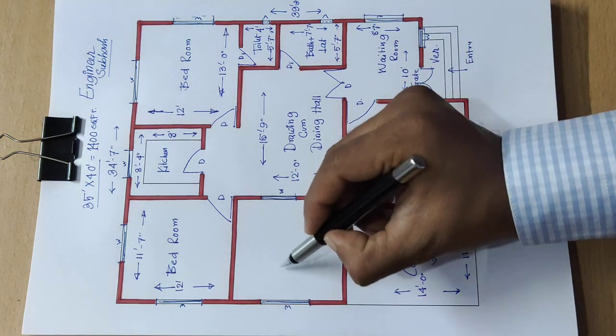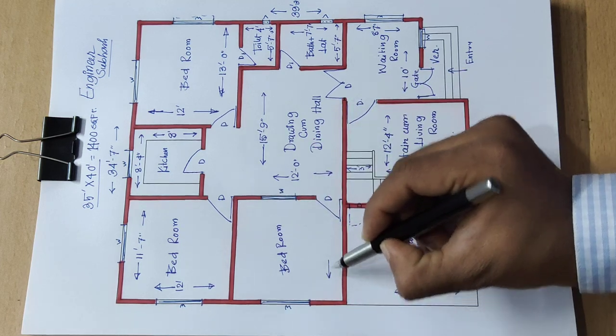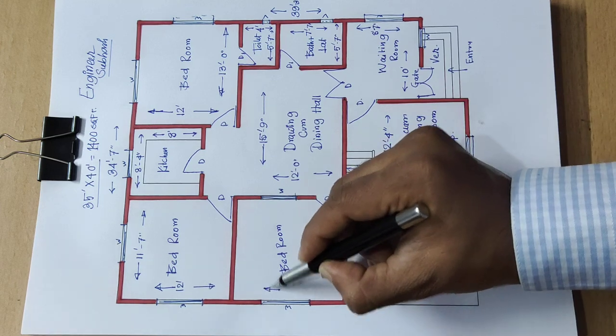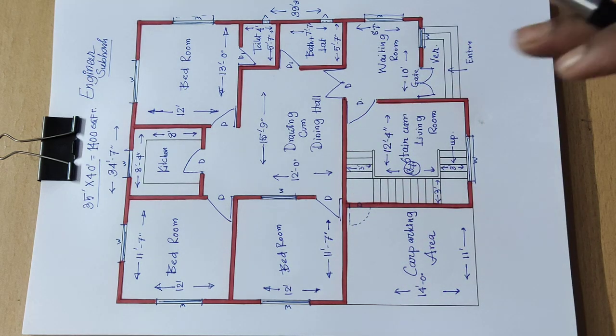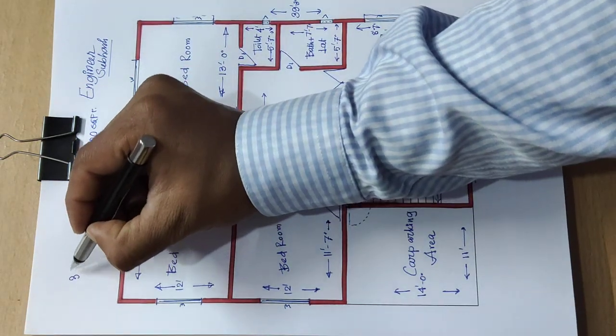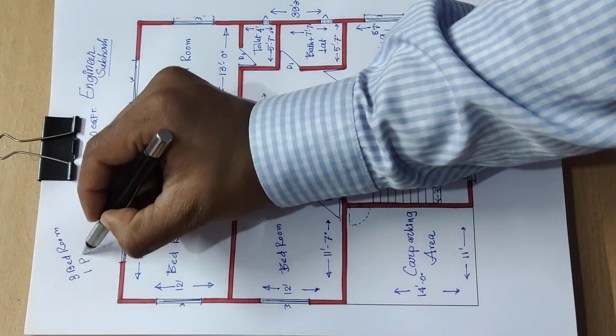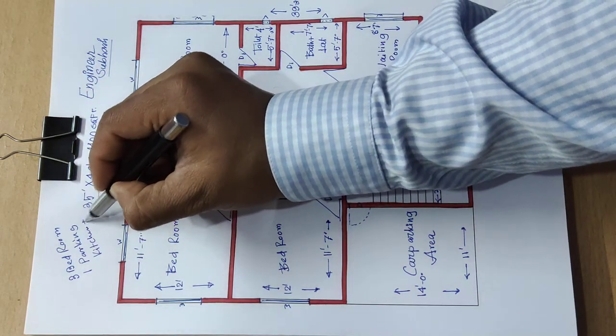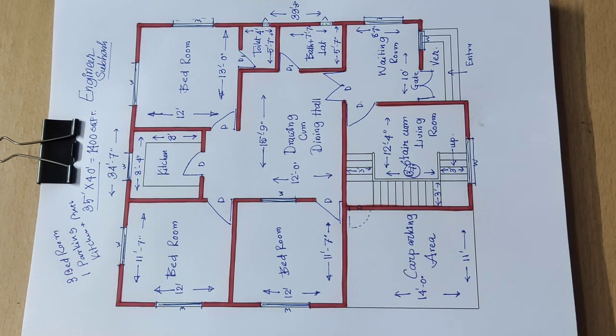Next here is bedroom, distance same here is 11 feet 7 inch and here is the bedroom, 9 feet.